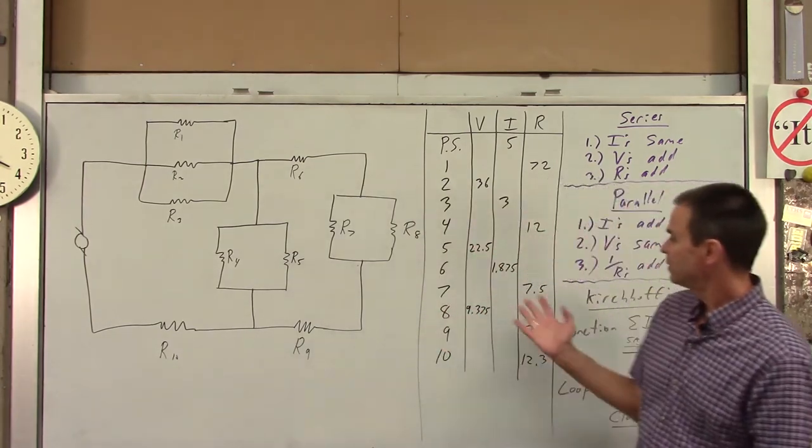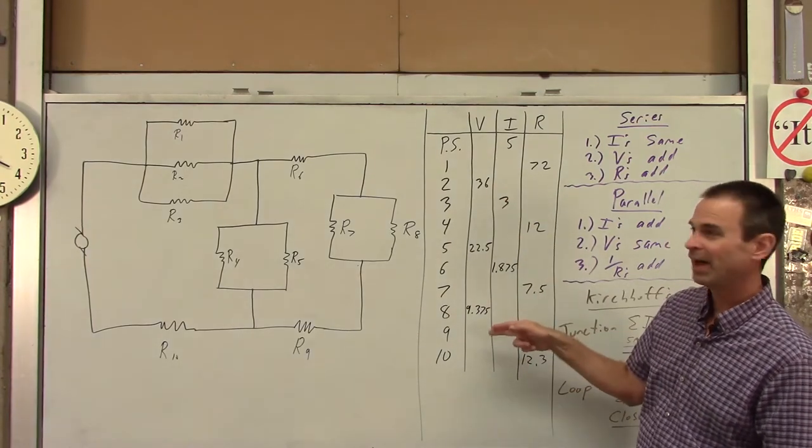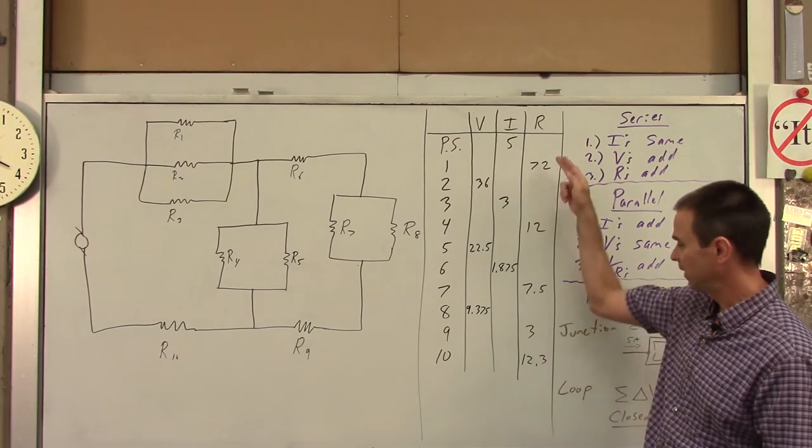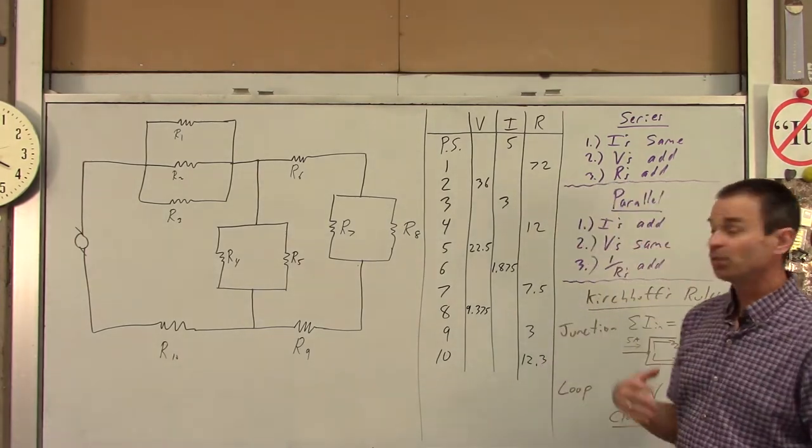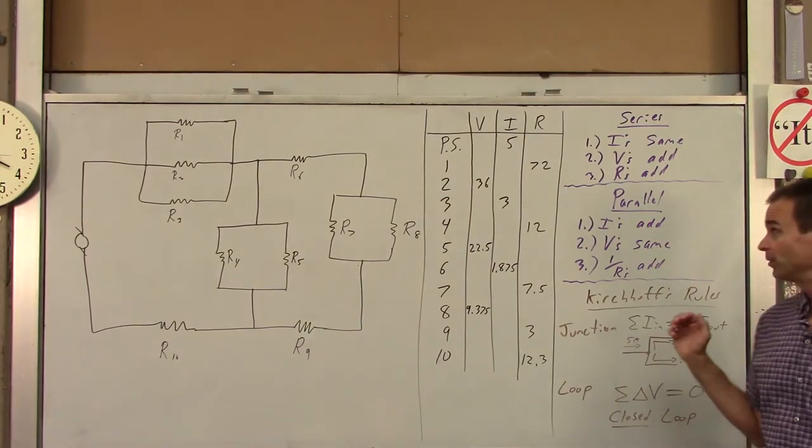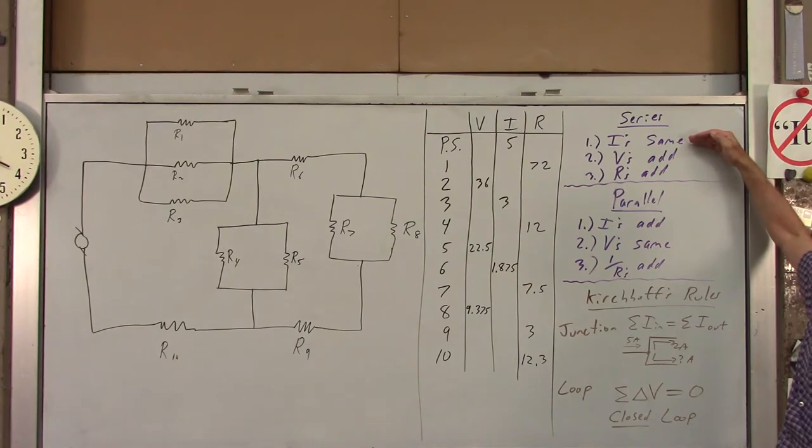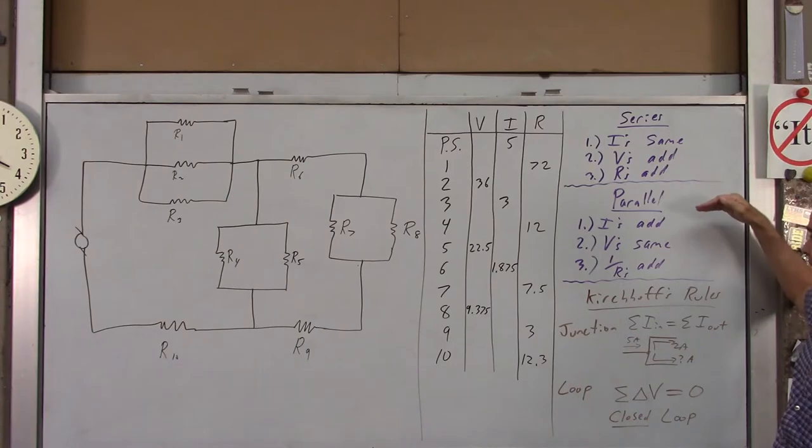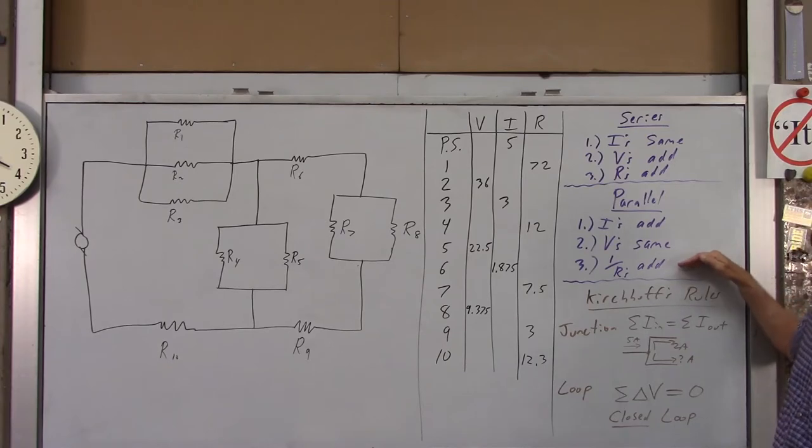You've been given some of the info - voltages for a couple items, currents for a couple items, and the resistance of a couple of the items. I've also written down the rules of the road that we're going to be using. In a series circuit, we know the currents are the same, the voltages add up, and the resistors add up. In parallel, the currents add up, the voltages are the same, and you do the 1 over R to get the equivalent resistance.